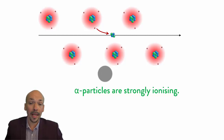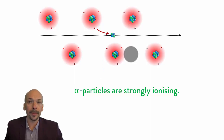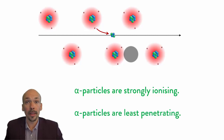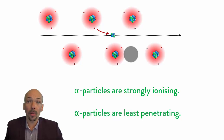Alpha particles are also very heavy and very large, so if they hit something they can also destroy those atoms, which for our body would not be good. But because they're so big and heavy, they're also less penetrating than the other particles. If they hit something, they lose a lot of velocity, and if they don't have any velocity they're not dangerous anymore and not able to ionize. So alpha particles are strongly ionizing but they are the least penetrating of all radiation.